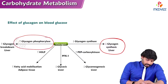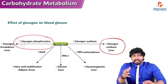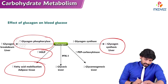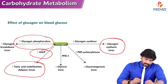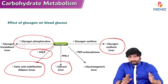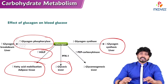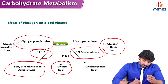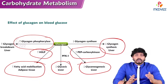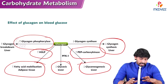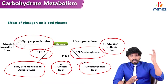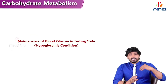Glucagon increases glycogen phosphorylase activity. It also increases hormone-sensitive lipase activity, meaning it increases fatty acid mobilization from adipose tissue — though this is not active in the well-fed state. Glucagon decreases glycolysis in the liver by acting on phosphofructokinase, and increases phosphoenolpyruvate carboxykinase — a key enzyme for gluconeogenesis. These enzymes — glycogen phosphorylase, phosphoenolpyruvate carboxykinase, hormone-sensitive lipase, phosphofructokinase — have their activity decreased by insulin and increased by glucagon.